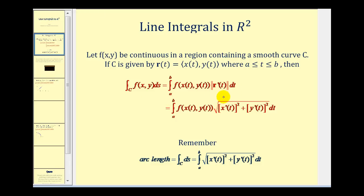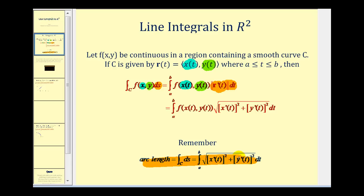There are several things to notice here. First, the function f of xy is rewritten as a function of t by replacing x with x of t and y with y of t, where x of t and y of t come from the components of the vector-valued function R of t. Then differential ds is replaced with the magnitude of R prime of t dt. This should look somewhat familiar because we did this when we were determining arc length earlier in the semester. We can rewrite the magnitude of R prime of t as the square root of x prime of t squared plus y prime of t squared.